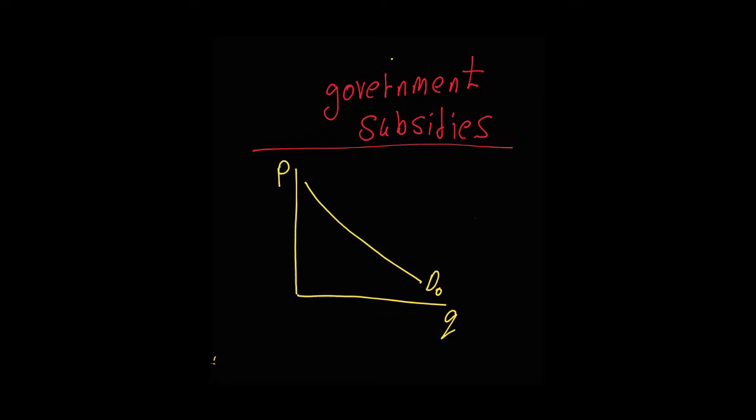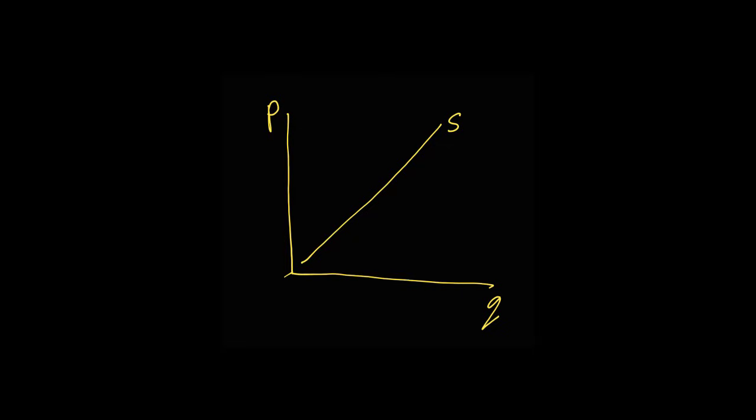Then you've got the sellers, the producers. For them, the logic is the total opposite. The higher the price they can get for their product, the more they want to make and sell. It's just good business. This creates the supply curve, which, you guessed it, slopes upward.